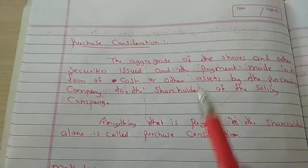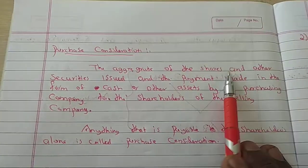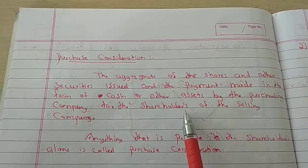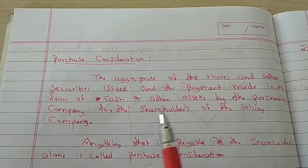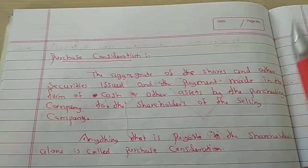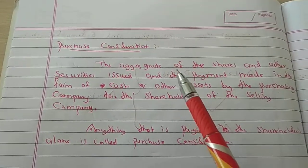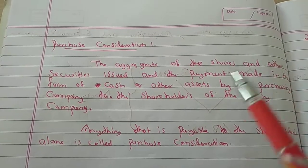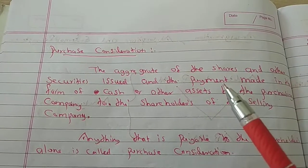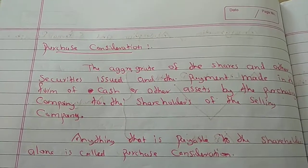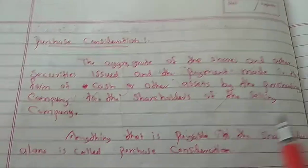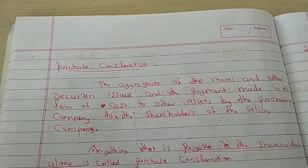Purchase Consideration means the aggregate of the shares and other securities issued, and the payment made in the form of cash or other assets by the purchasing company to the shareholders of the selling company. So, anything that is payable to the shareholders alone is called Purchase Consideration. Two companies are there — A company and B company — and when A company takes over B company, obviously some payment is made. That payment is Purchase Consideration.